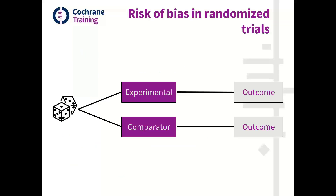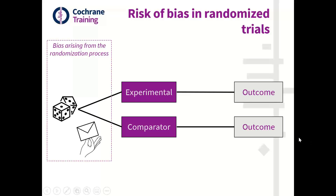Some of you may have attended previous webinars on ROB2, or if not, welcome — this will be your first one. I personally think this is one of the most interesting domains of bias. Just as a recap about where we are in the ROB2 tool: risk of bias can occur at several stages of a randomized trial.